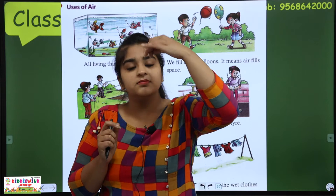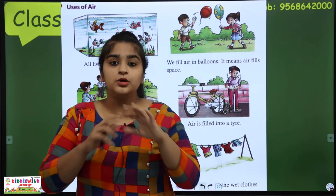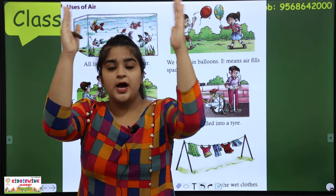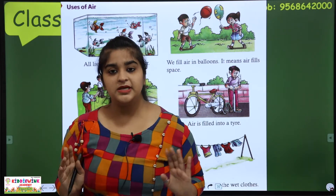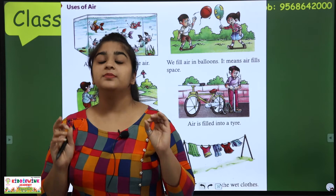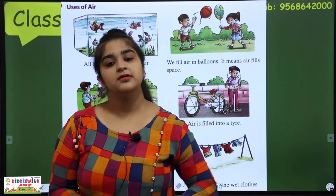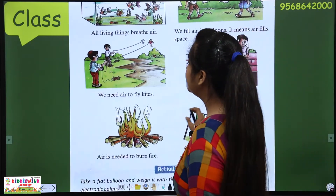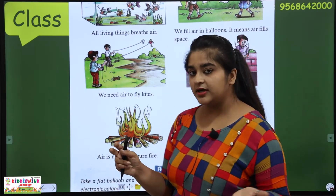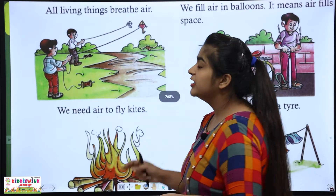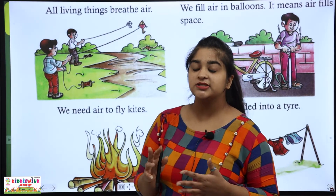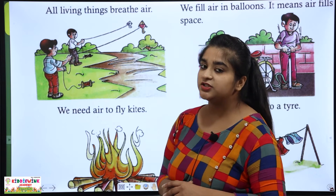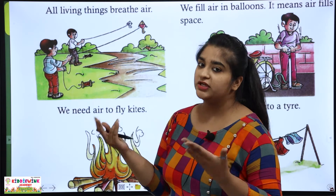Because when you fill the balloon, it doesn't have any shape. But when we fill it with air, it becomes a round shape. It means air takes up space. We need air to fly kites — until there is no air, a kite cannot fly. So for kite flying, we need air.